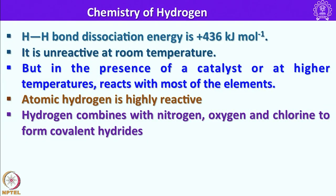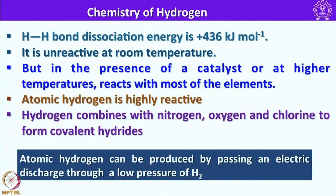Let us look into the chemistry of hydrogen. Hydrogen exists as a dimeric species; the H-H bond dissociation energy is +436 kJ/mol. It is unreactive at room temperature, but in the presence of a catalyst or at higher temperature it reacts with most elements in the periodic table. At higher temperature it reacts violently with oxygen to form H2O, and atomic hydrogen is highly reactive; hydrogen is capable of combining with nitrogen, oxygen, and chlorine to form covalent hydrides.